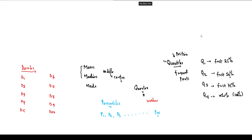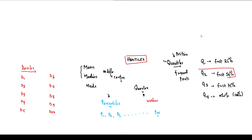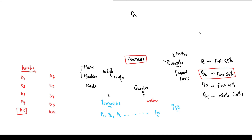The quartiles, the deciles, and the percentiles are all called fractiles, meaning they are ways in which we divide our distribution. We will notice that the second quartile, Q2, represents the 50% mark — the middle point. The fifth decile also represents the 50% mark, and P50 also represents the middle position. This simply implies that for any distribution, Q2 is the same as the fifth decile, which is the same as the 50th percentile.